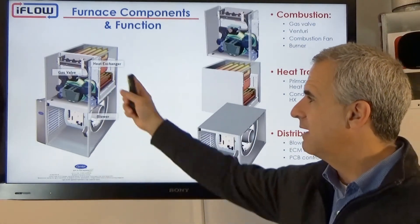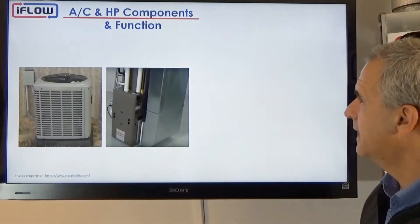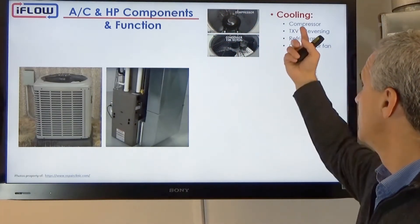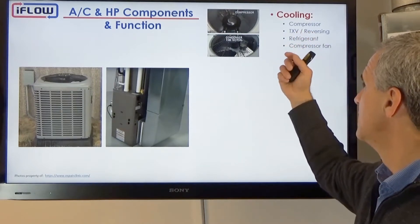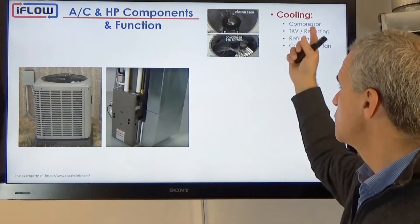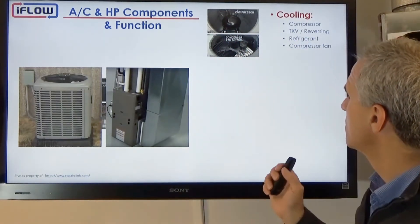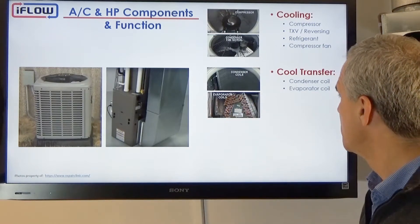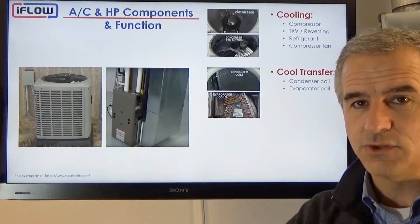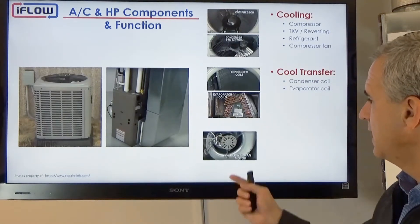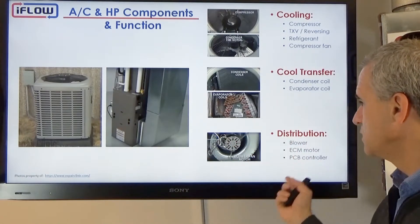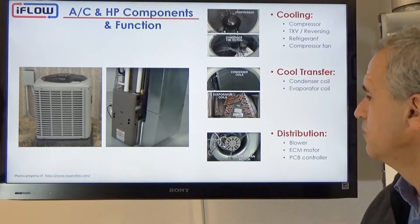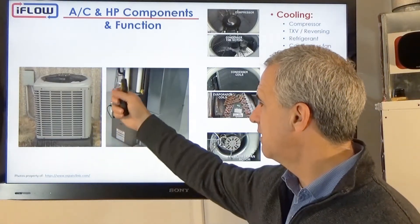On the air conditioning side, very similar — we have the compressor that creates all of the cooling. We have the reversing valves, the expansion valves, the refrigerant, and then the compressor fan. Those work together to create the cooling. Then we have the outdoor unit, or the condenser unit, and the indoor unit, or the evaporator coil — these do the heat transfer. Similar to the furnace side, we have a fan for distribution. This blower would be in the air handler or in a furnace.